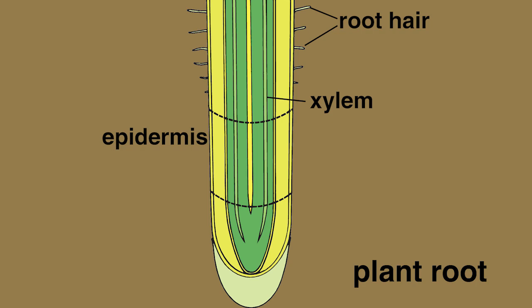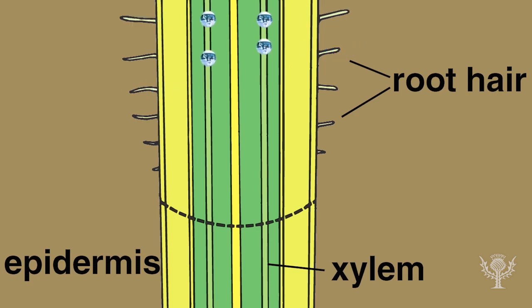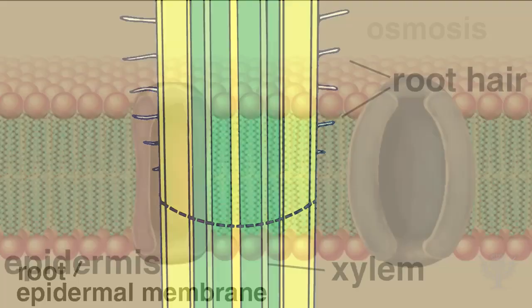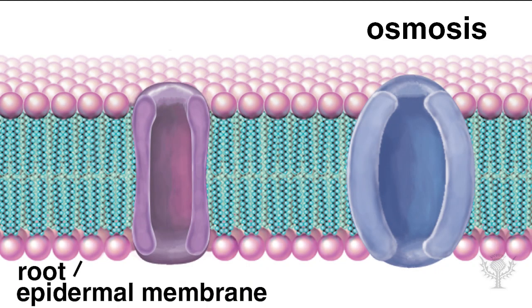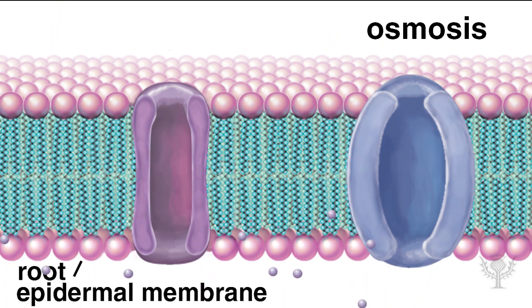During osmosis, free water molecules pass from the soil into the epidermal cells using the root hair membrane. Looking at this process at the molecular level, we see that the small water molecules pass easily through the selectively permeable membrane of the epidermal cells.